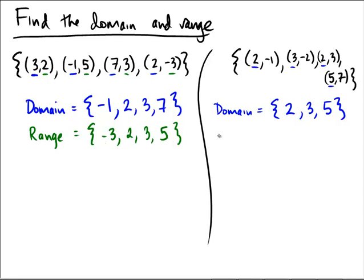But that's neither here nor there on this problem. What's the range of this relation? The range would be the Y coordinates we see. That's a negative 1, a negative 2, and a 3, and a 7.